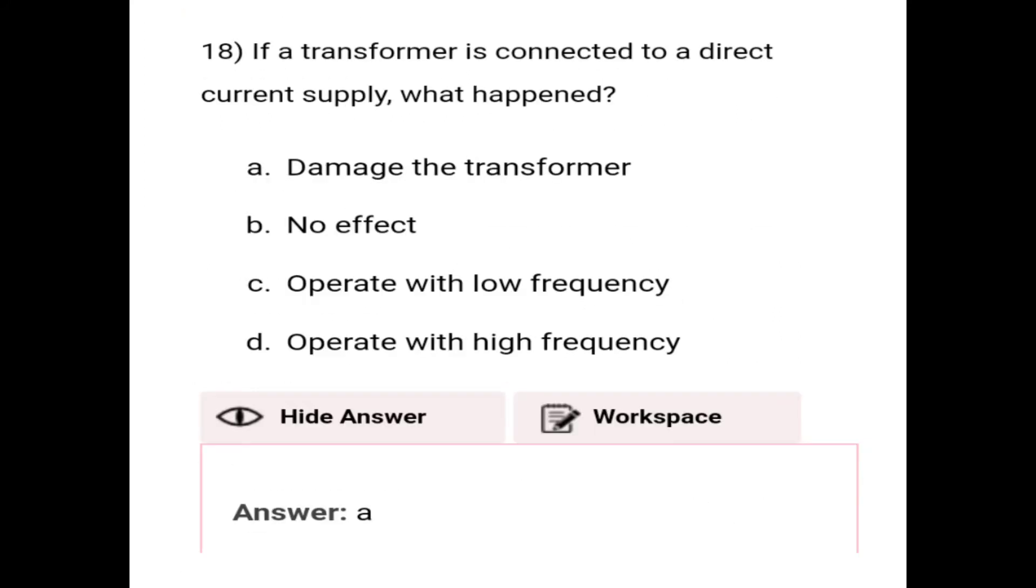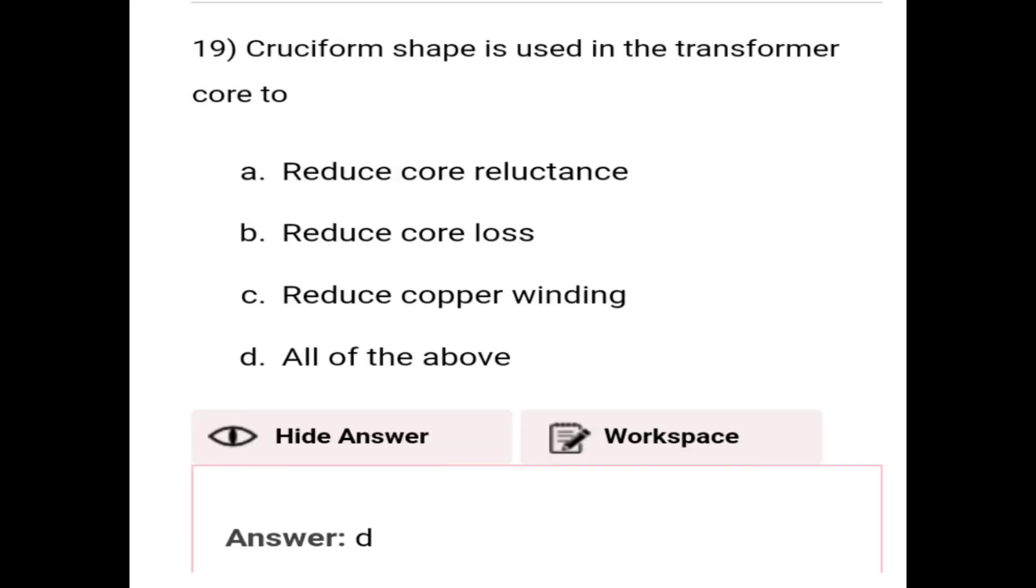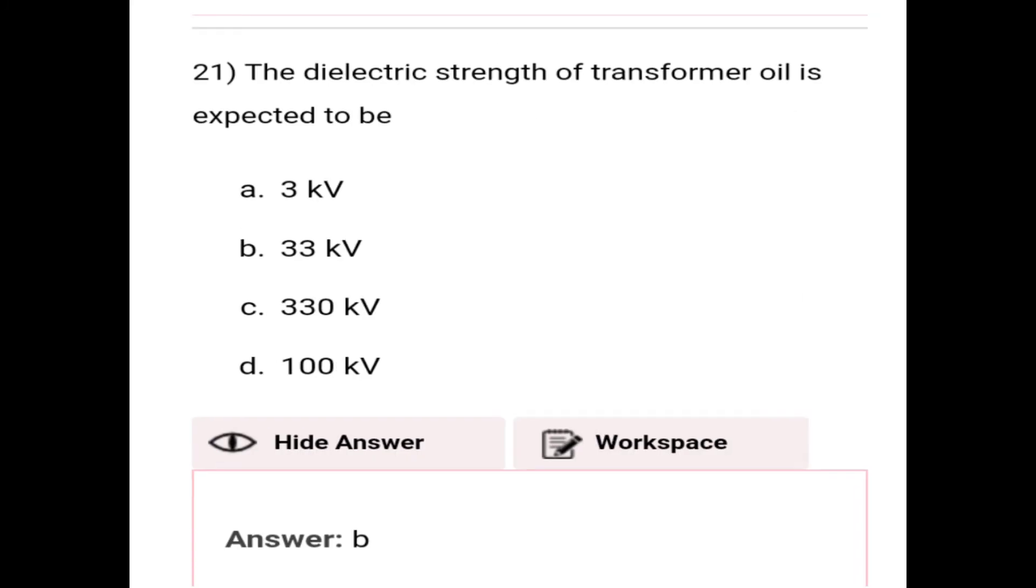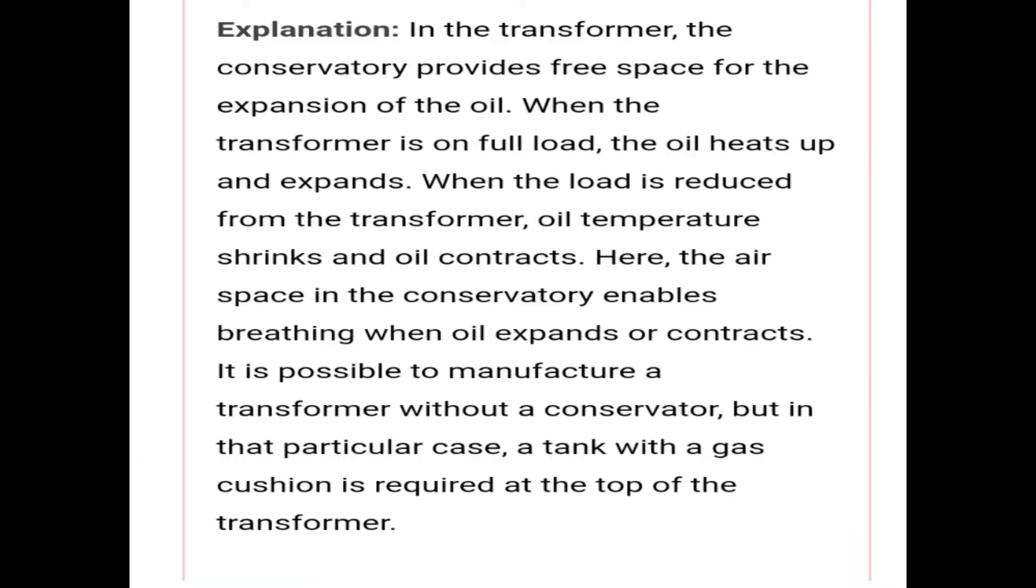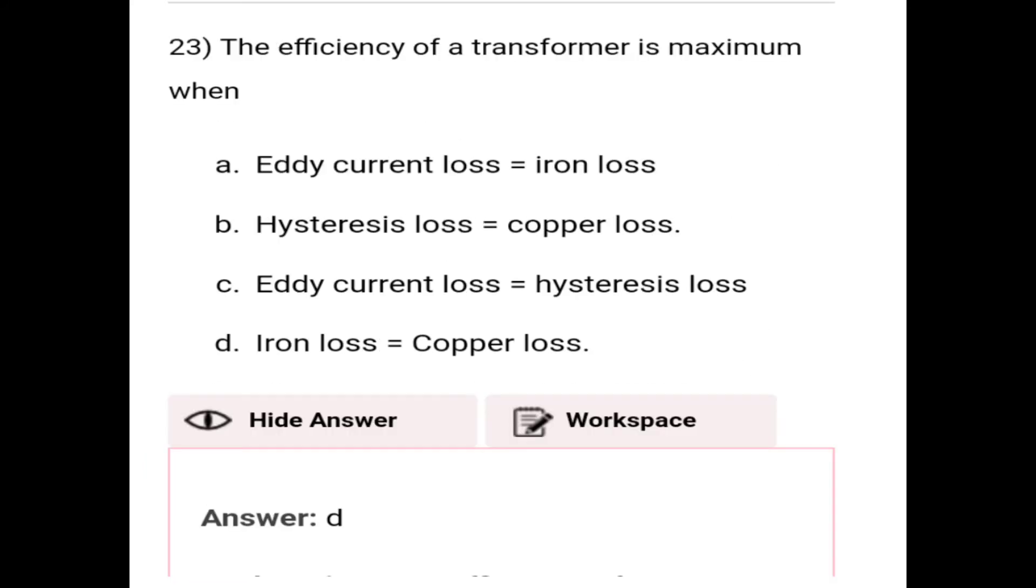There are so many MCQs. This is number 19 through 23. Question 22, I will upload separately. This is the 23rd question: The efficiency of a transformer is maximum when. The correct answer is option D, that is iron loss equals copper loss.